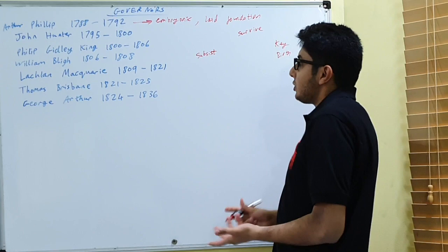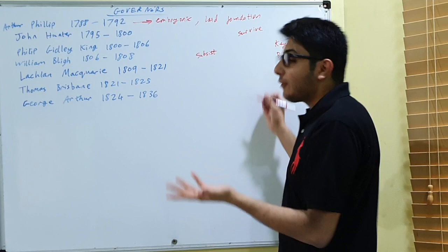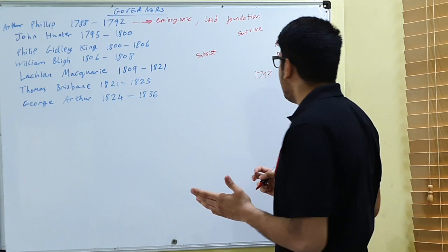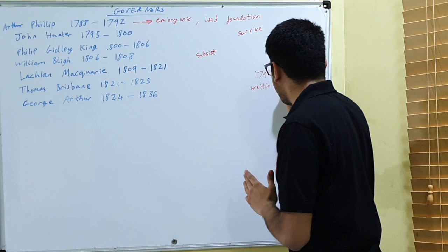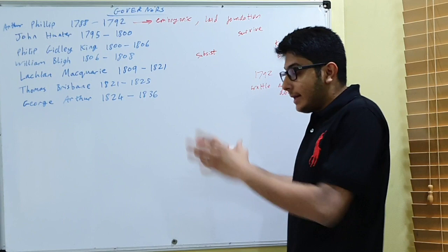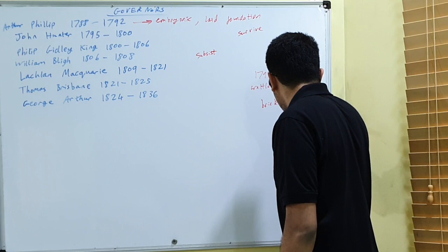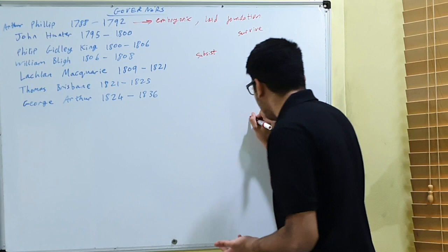Let's look at some evidence to support that. In terms of laying the foundation, well infrastructure: by 1792 when Phillip left and went back to London, everyone had rudimentary wattle and daub dwellings. They were of poor quality obviously, but everyone had some form of shelter, and there was a brick-built governor's mansion.